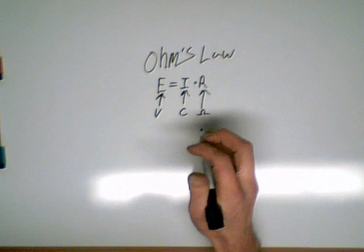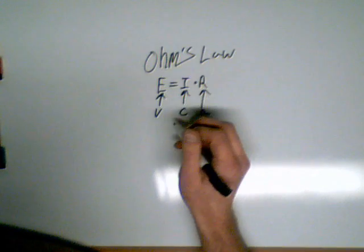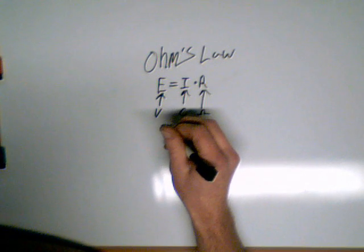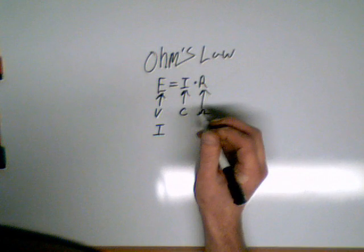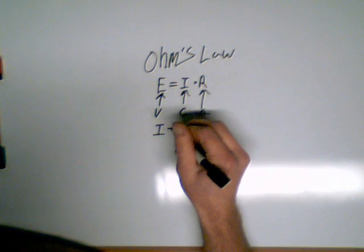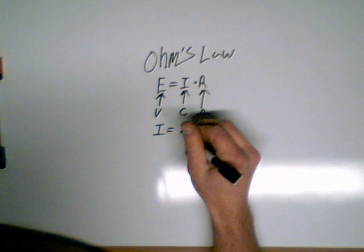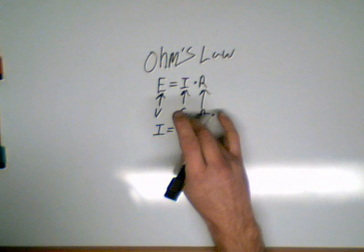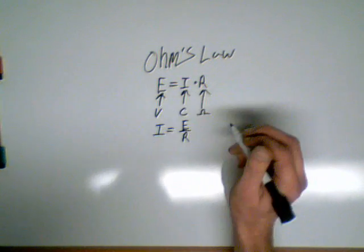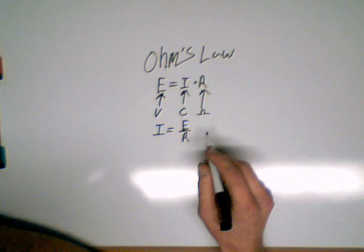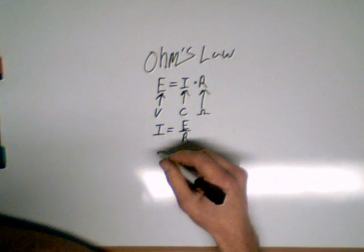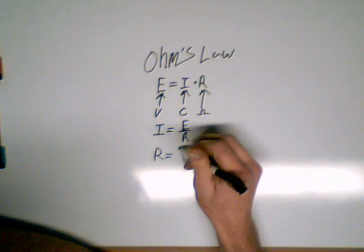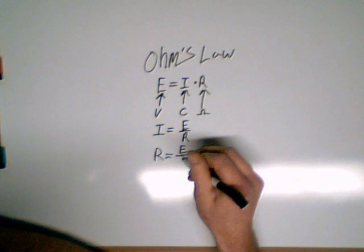Now you can rearrange this formula in a few different ways. That's calculating for voltage, knowing your current and your resistance. You can also figure out your current if you know your voltage and resistance. So I equals E divided by R. And if you want to calculate for resistance, resistance equals E divided by I.